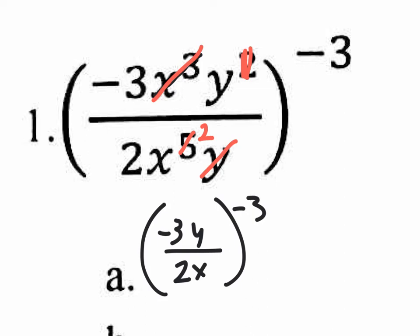Now what do we do with the exponents that are outside of parentheses? The X has a two. So what do we do with the outside negative three? Distribute it to each and every exponent. There's an exponent of one on the negative three, an exponent of one on the Y, an exponent of one on the two, and an exponent of two on the X.